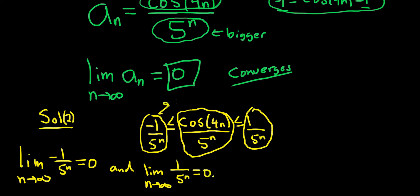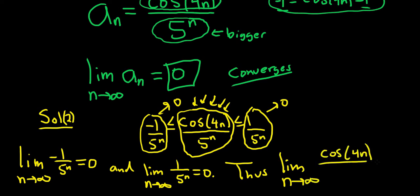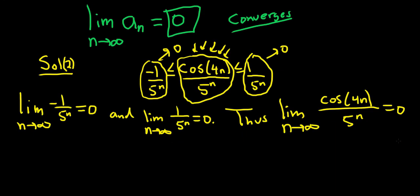So this goes to 0, this goes to 0, this one is trapped in the middle, this middle piece. And so thus, the middle piece, the limit as n goes to infinity of the middle piece, cosine of 4n over 5 to the n, is going to be 0. And this is by the squeeze theorem.